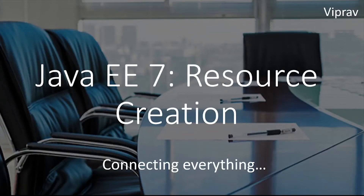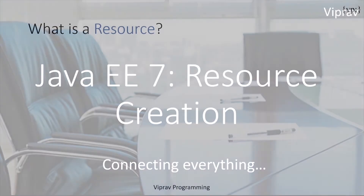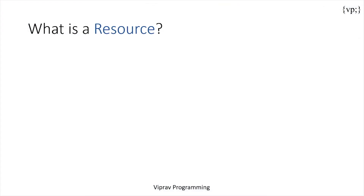Hello everybody and welcome to your third chapter in your Java EE 7 tutorial. Today we'll be talking about why Java EE requires that you need to connect to multiple components like databases, messaging services, etc. We can create these connections by using resources. Now let's jump into it.